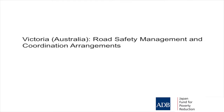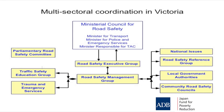Here are the arrangements that exist in Victoria, Australia. There's actually a ministerial council sitting on top of the executive group and management group, with technical working groups not shown. There's also a parliamentary road safety committee — a group of parliamentarians that meets perhaps eight or nine times a year. They run public inquiries into contentious road safety issues, such as drug driving or drink driving, hold public hearings, receive submissions from road safety agencies and community groups, and it's a very transparent and effective process for getting issues on the agenda.